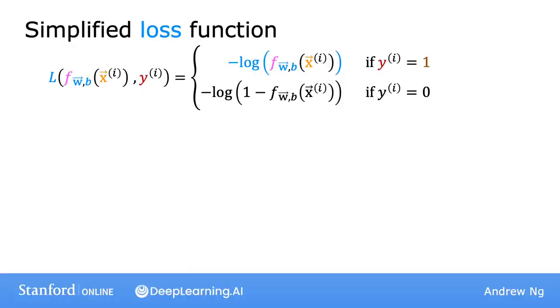As a reminder, here's the loss function that we had defined in the previous video for logistic regression. Now, because we're still working on a binary classification problem, y is either 0 or 1. Because y is either 0 or 1 and cannot take on any value other than 0 or 1, we'll be able to come up with a simpler way to write this loss function.